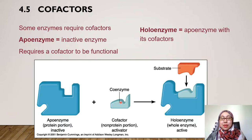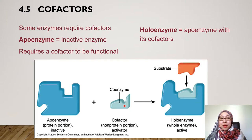and it requires a cofactor to be functional. This is the coenzyme. Looking at this holoenzyme — the holoenzyme is the apoenzyme with its cofactors. The cofactor binds to the apoenzyme, and the resulting holoenzyme is active. The substrate will then bind to the active site.